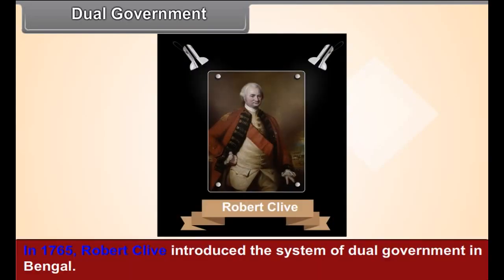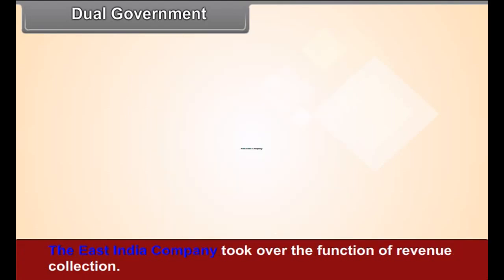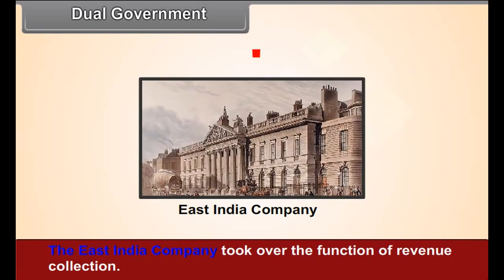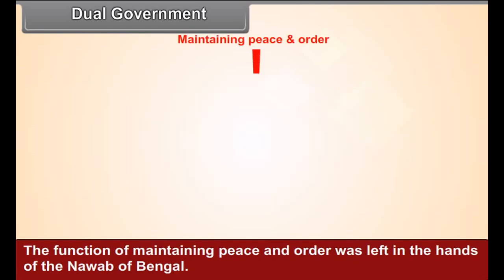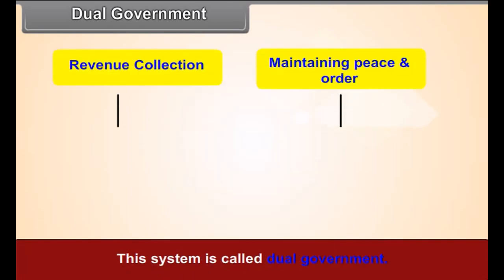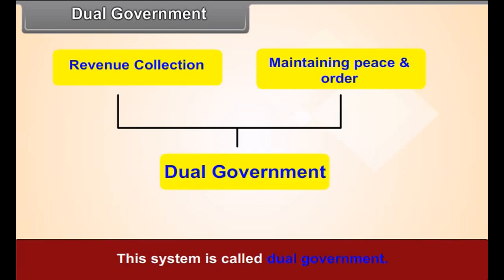Dual Government. In 1765, Robert Clive introduced the system of dual government in Bengal. The East India Company took over the function of revenue collection. The function of maintaining peace and order was left in the hands of the Nawab of Bengal. This system is called dual government.